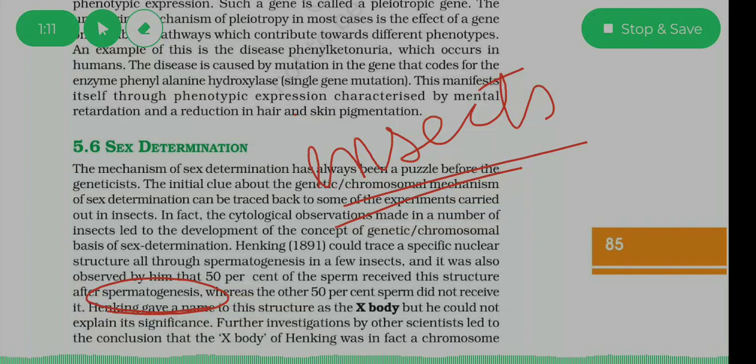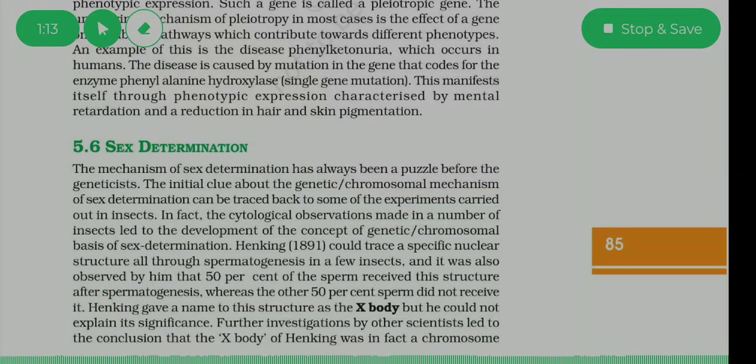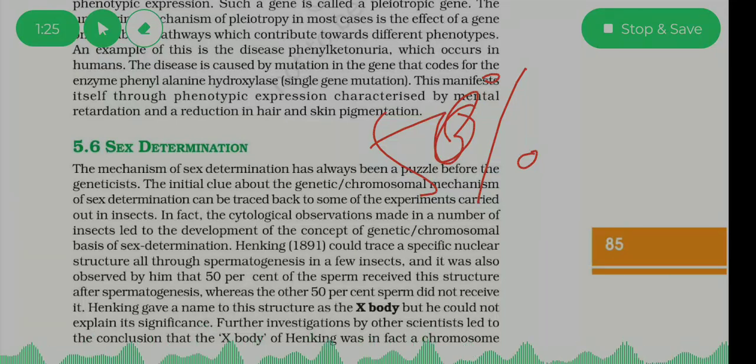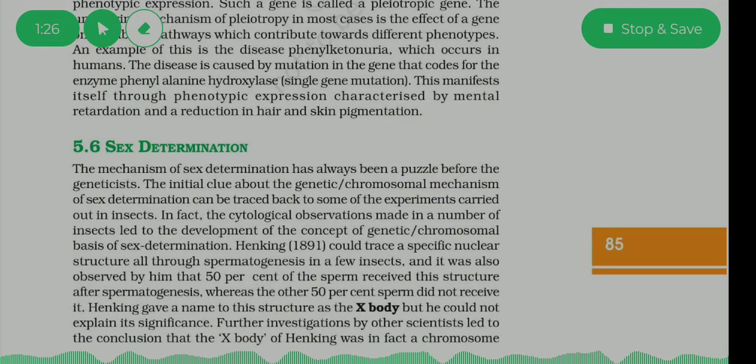To usse voha pere dekha, ki joh uske males thae insect me, spermatogenesis to males me hie ho ga na, to unme 50% a raha tha joh X chromosome hai, urnne receive kiya tha, 50% hi. To usse structure ka naam dya X body, thik hai.